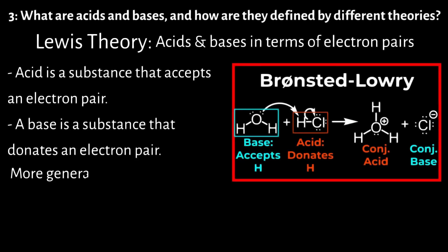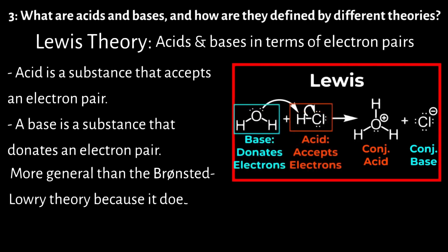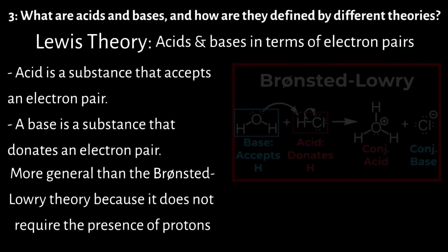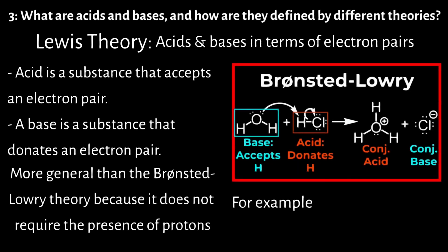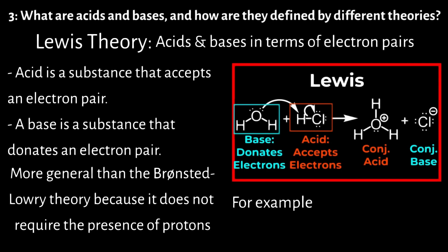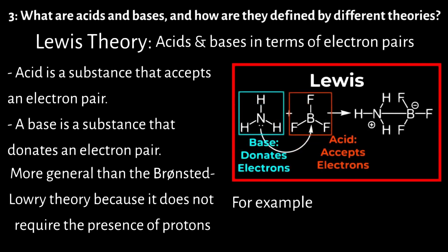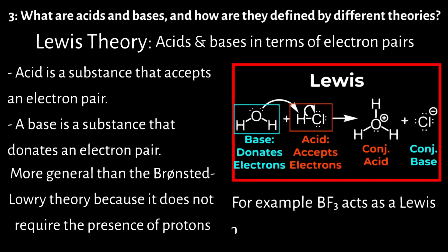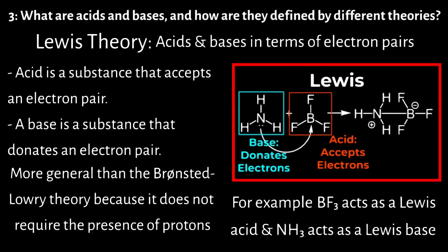The Lewis theory is more general than the Bronsted-Lowry theory because it does not require the presence of protons. For example, in the reaction between boron trifluoride (BF3) and ammonia (NH3), BF3 acts as the Lewis acid by accepting an electron pair from NH3, which acts as the Lewis base.